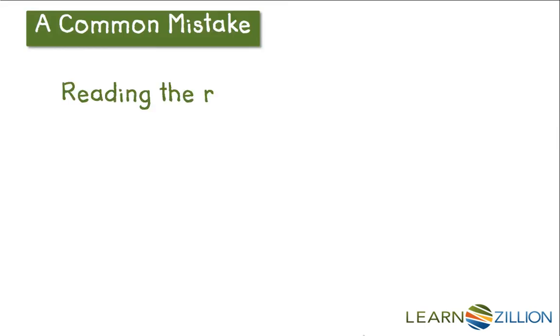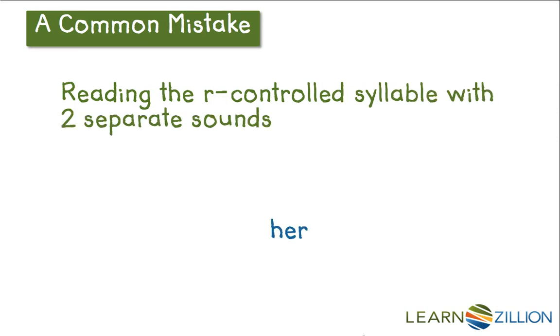A common mistake when reading R controlled syllables is separating the syllable into two separate sounds, instead of creating one whole new sound. So for example, reading this word as h-e-er, her, instead of the way it actually is her.